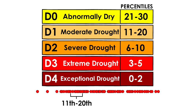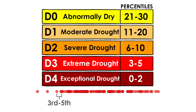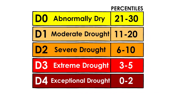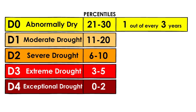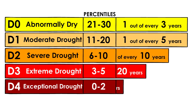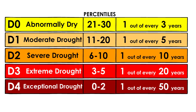For D3 drought conditions, or the 3rd to 5th percentile, the value would need to fall between the 3rd and 5th lowest on record. We can describe each category by how often we would expect to see these conditions — 1 out of every 3 years for D0, all the way to 1 out of every 50 years for D4.